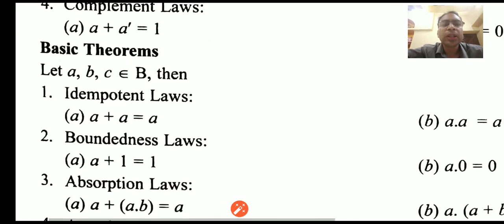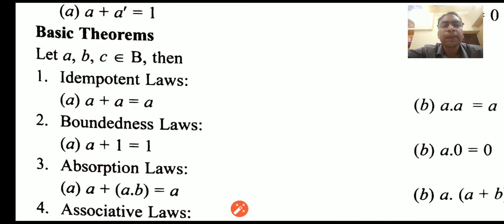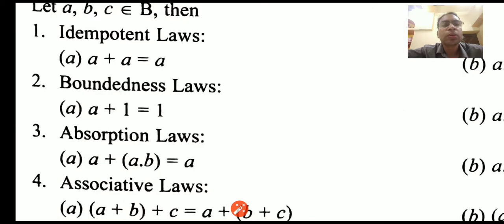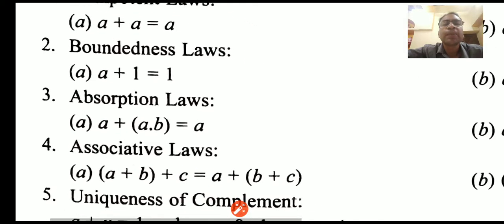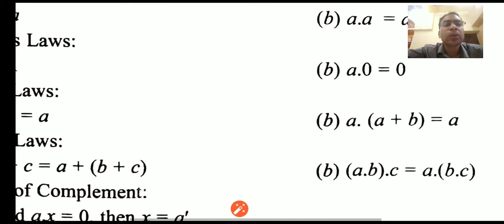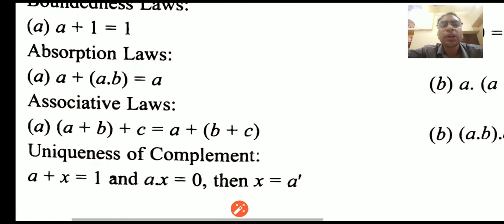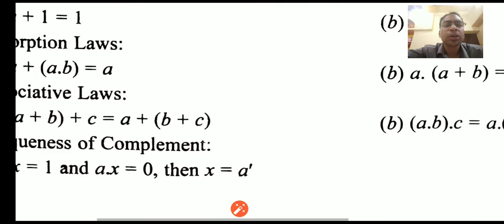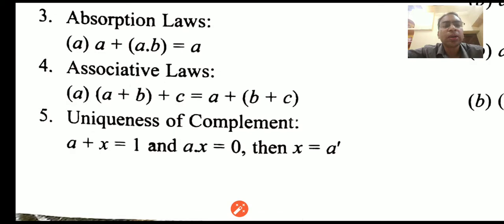Some basic theorems: the idempotent law states that if we add the same variable with itself, the result is the same variable — a plus a is equal to a, and a dot a is equal to a. Boundedness, also known as unitary laws: a plus 1 is equal to 1, and a dot 0 is equal to 0. Absorption: a plus (a dot b) is equal to a, or a dot (a plus b) is equal to a. Associative: a plus (b plus c) is equal to (a plus b) plus c, and similarly a dot (b dot c) is equal to (a dot b) dot c.